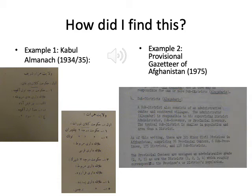And that's for 1934, 1935. Then I found an English language provisional gazetteer of Afghanistan from 1975, where it just outright says how many minor civil divisions there were. So you have to kind of be a detective — you have to dig around and find sources to fill in the blanks.